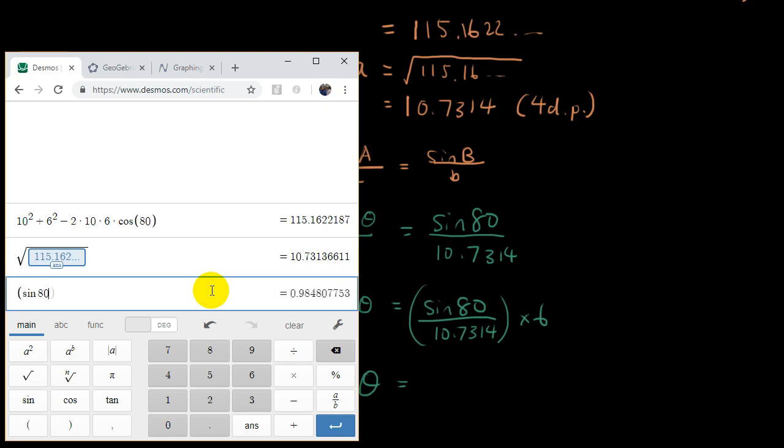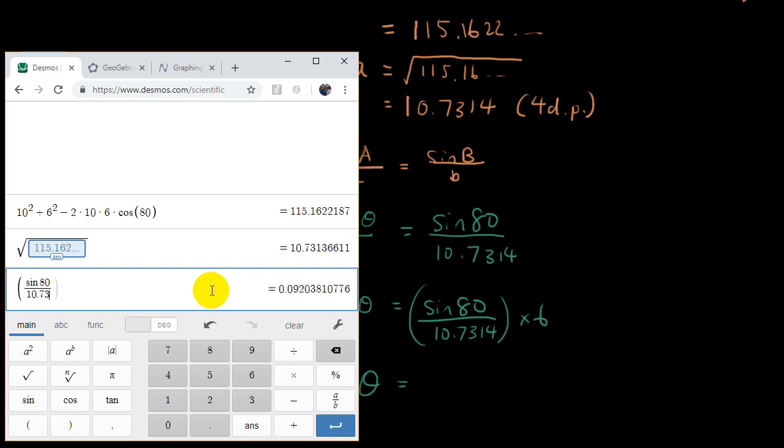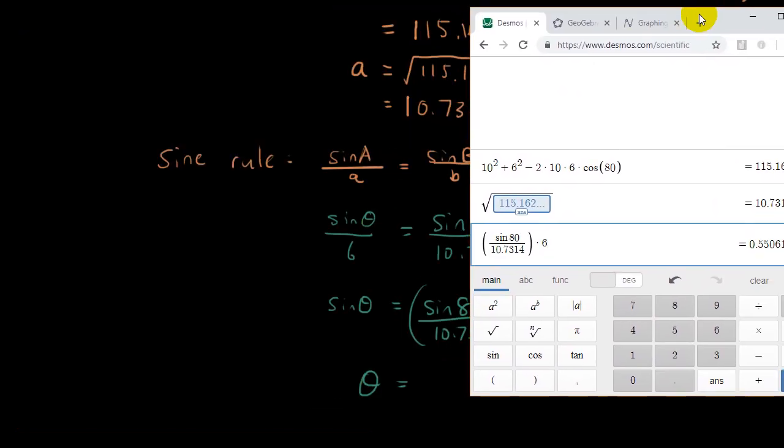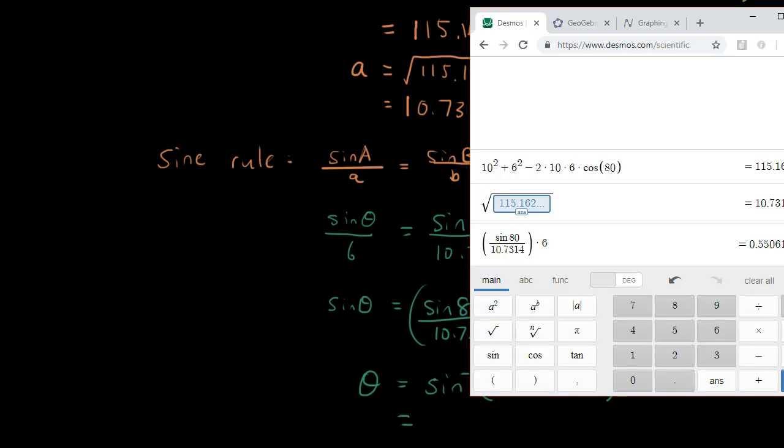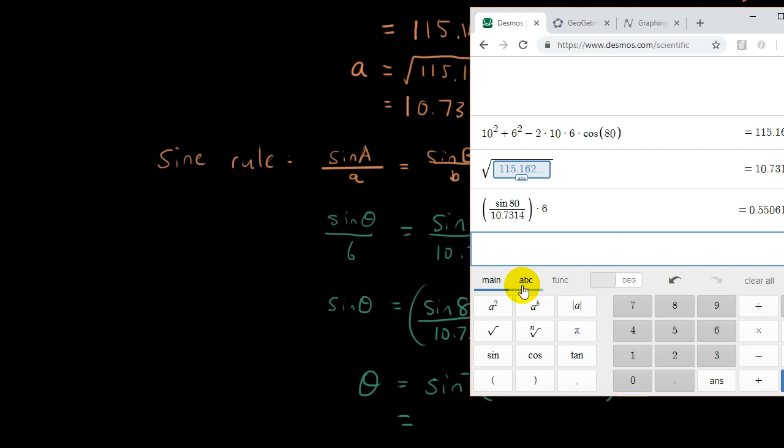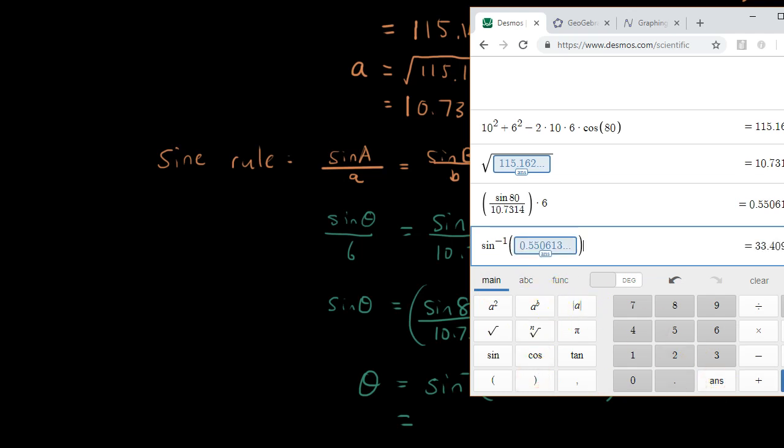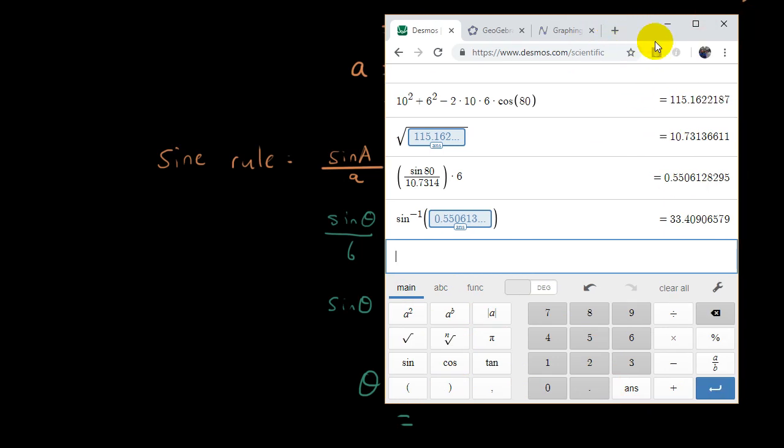In brackets, sine 80 divided by 10.7314 times 6. Yes, we need to inverse sine that. So let's write that number down first. And then inverse sine it. Inverse sine 0.5506. So inverse sine that. Where is inverse sine? Function. Inverse sine. Inverse sine the answer from the previous question. And it's 33.4.